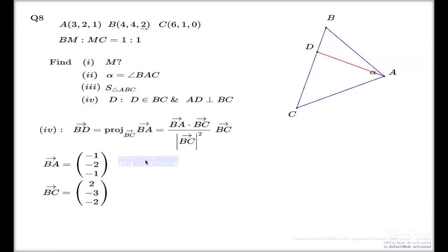Dot product of these two vectors is negative 1 times 2, it's negative 2. Negative 2, negative 3, it's 6, so it's 4. And negative 1, so it's 6. Dot product is 6.